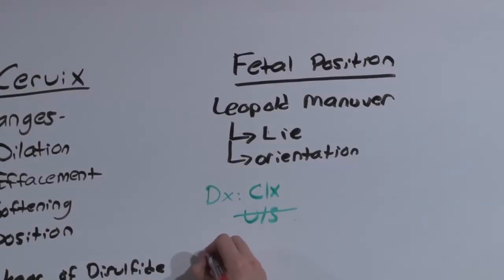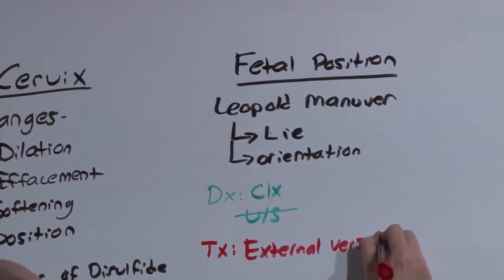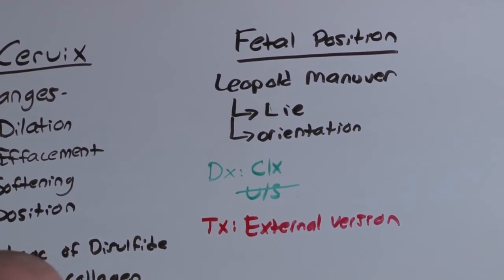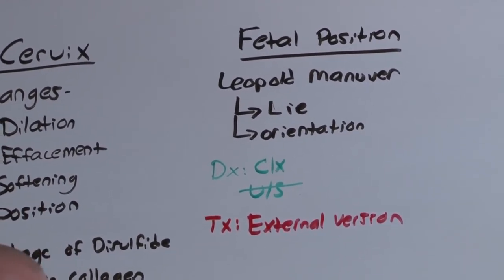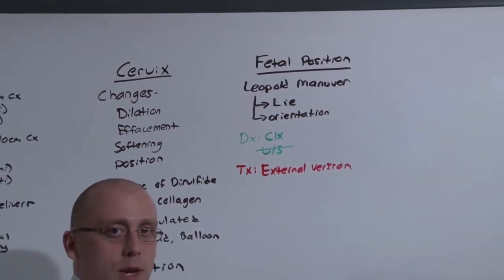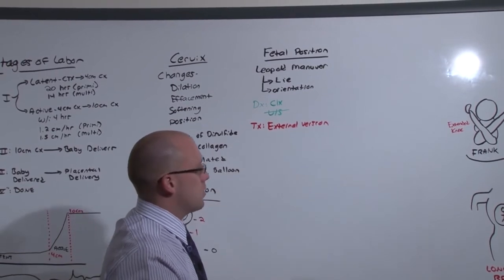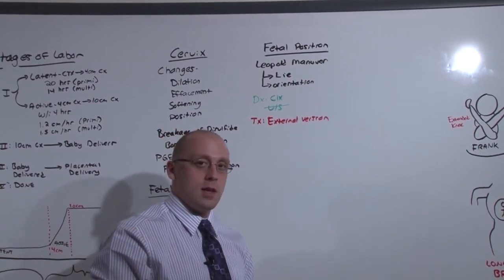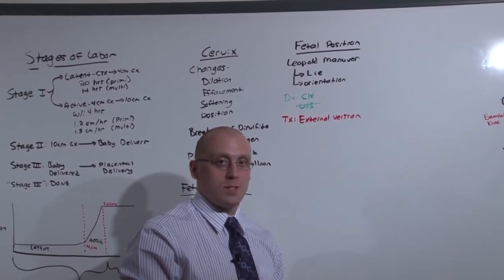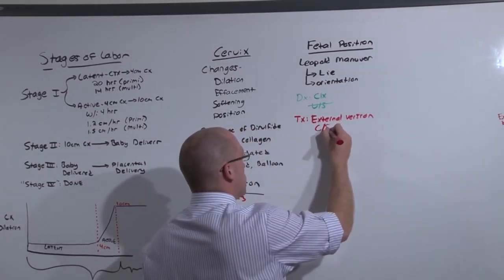And if someone is in an inappropriate position, you can attempt external version. Where from the outside, you actually manipulate the baby around. You get their head positioned in the right way. You get them in the right line. Now they can just flip right back, but external version is a way that you can get the baby in the proper position to avoid C-section. Unfortunately, if they're in that abnormal position and all of a sudden they flip back to the bad spot, you may simply have to do a C-section in order to deliver.